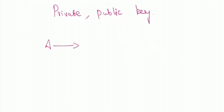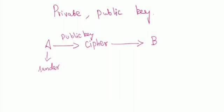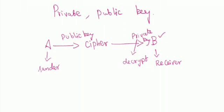Here the receiver is going to use a private key to decrypt the information. So the receiver B is going to decrypt the information by means of using a private key.